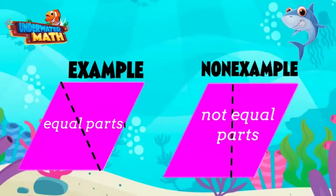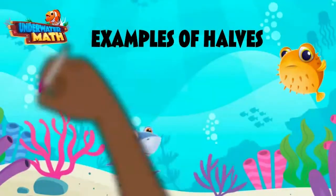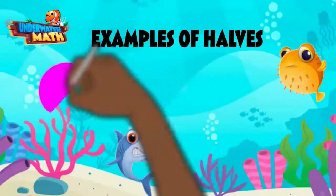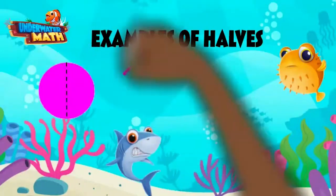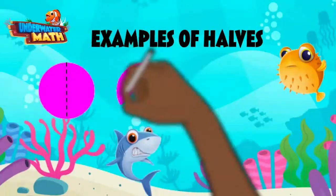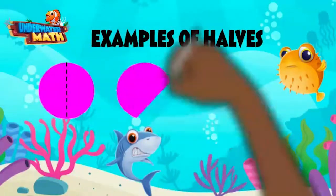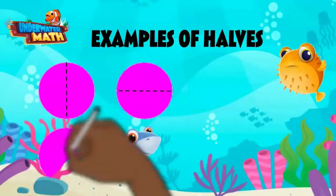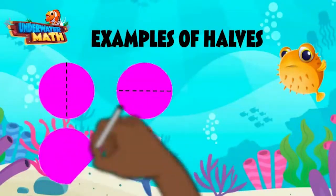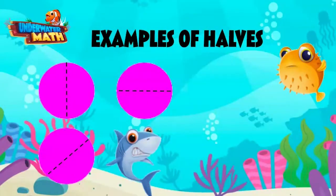Let's look at our first type of fractions: halves. That's what happens when we break a shape into two equal parts. Our first shape is a circle. If I wanted to cut it into halves, I can do it like that. I can also cut it diagonally or with a horizontal line, even with other shapes.